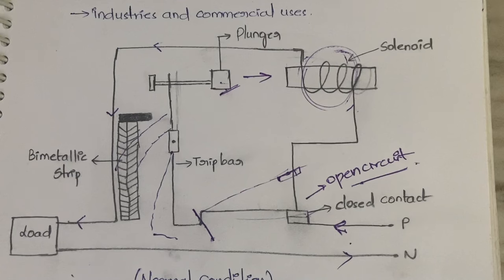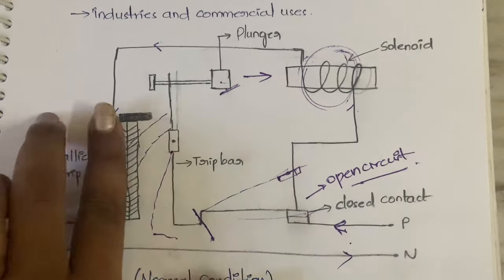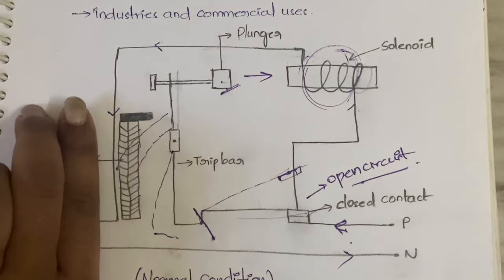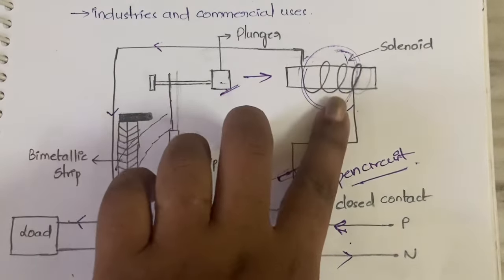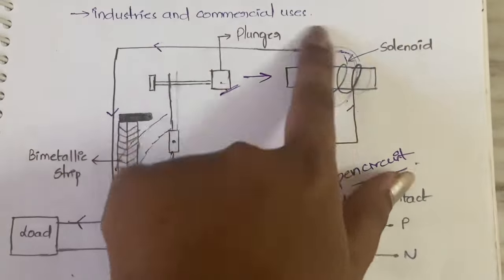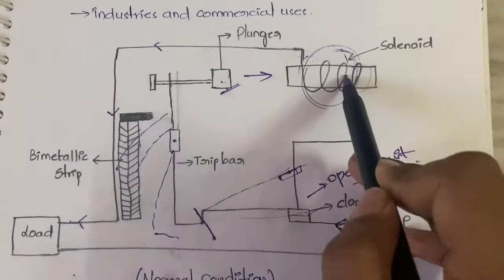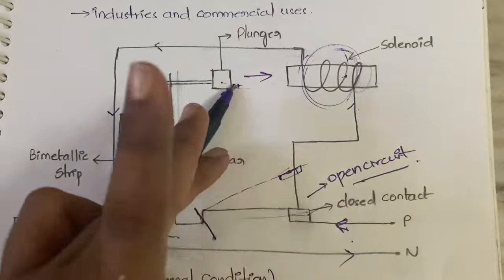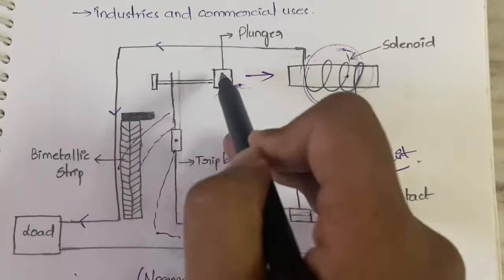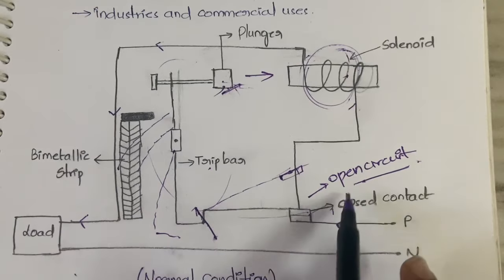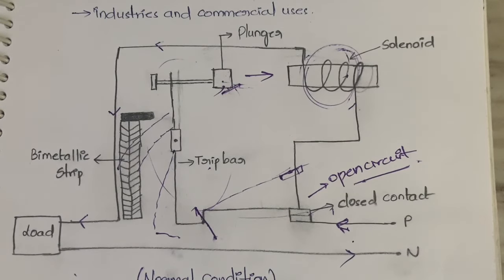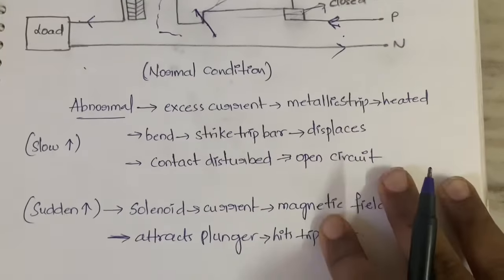The trip bar displaces again, the connection breaks, and the circuit becomes open — the same outcome as before. The difference is: in the case of a slow current increase, the bimetallic strip heats up, bends, and hits the trip bar. In the case of a sudden increase, the magnetic field attracts the plunger, which hits the trip bar, and the result is an open circuit.